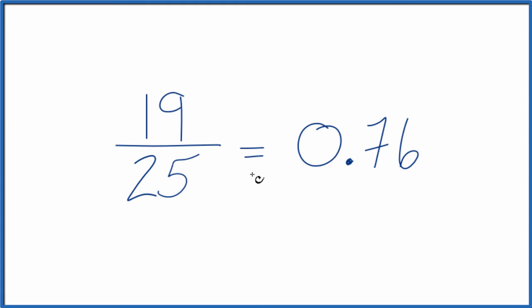So the fraction 19/25 is equal to the decimal 0.76. They're equivalent. They have the same value, just written differently.